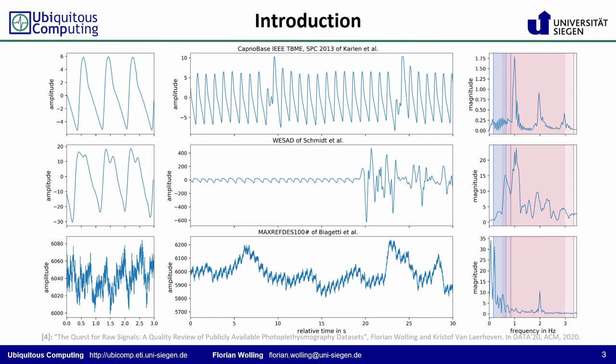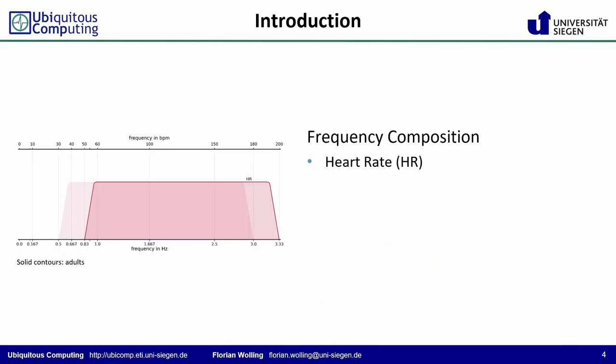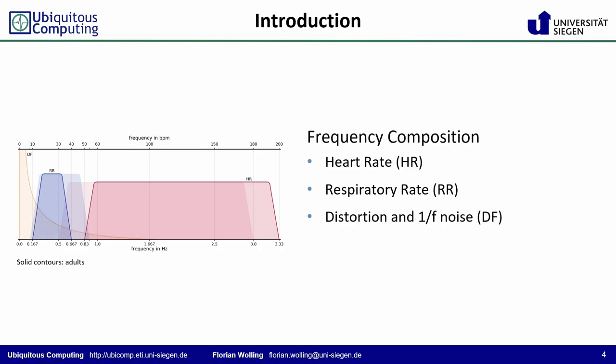In general, the use of raw signals demands more effort and background knowledge. The raw PPG signal consists of diverse frequency components. There is the wide frequency band of the natural heart rate itself. Since respiration modulates blood flow in multiple ways, the respiratory rate is also present. Additionally, there is a predominant DC offset due to the light's constant reflection in the skin, as well as distortion and 1/f noise. The loose attachment of wearables also induces diverse types of motion artifacts. Furthermore, particularly the overlapping frequency bands are not easy to distinguish.